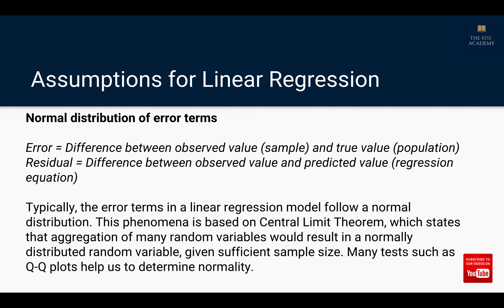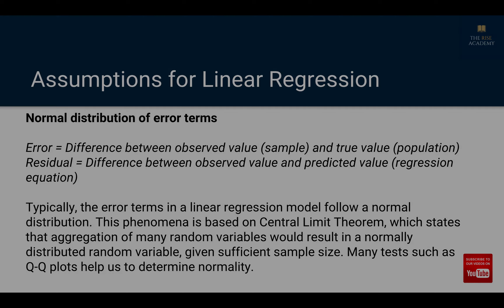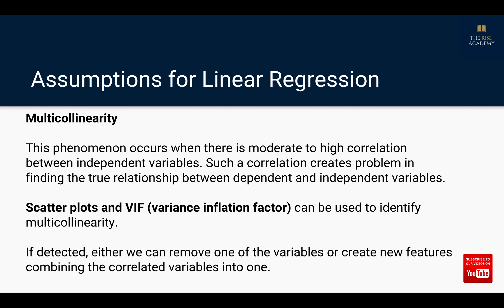Error terms in a linear regression model typically follow a normal distribution. This is based on the central limit theorem, which states that aggregation of many random variables will result in a normally distributed random variable given sufficient sample size. If error terms are not normally distributed, maybe regression is not the right algorithm. Tests such as QQ plots help us determine normality — if the QQ plot is at a 45-degree angle, the error terms are normally distributed.